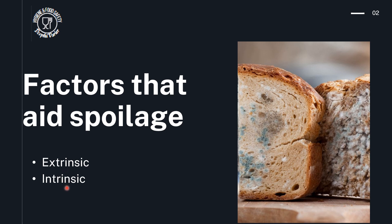We also have intrinsic or internal factors — factors which are in the food itself which can again help in spoilage. For example, the pH of the food or the water activity. Water activity is the amount of available water. If the amount of available water is more, then that allows microorganisms to grow better and helps in faster spoilage. So water activity is yet another intrinsic factor which is very crucial for spoilage to occur.